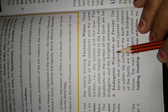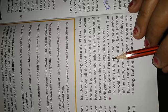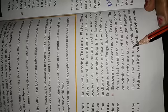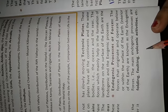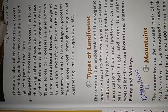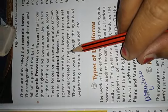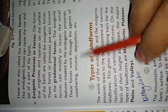The first is endogenic processes, or endogenic forces. These forces originate and operate below, or within, the surface of the earth. The main endogenic processes are folding, faulting, and volcanic activities — these happen under the earth's surface. Exogenic processes or forces originate and operate on the surface of the earth. These are also called gradational forces, and they include weathering, erosion, and deposition.